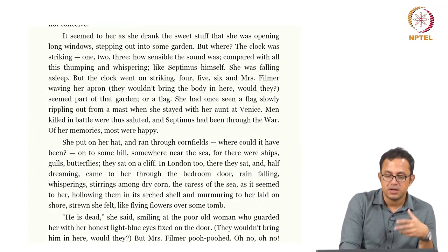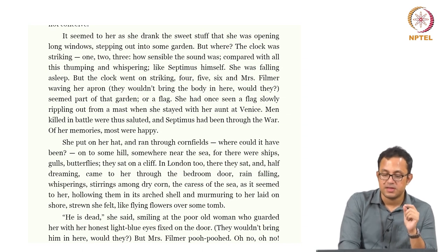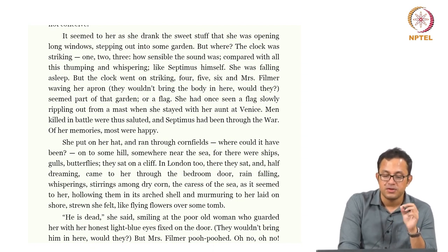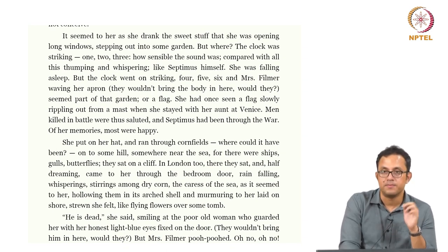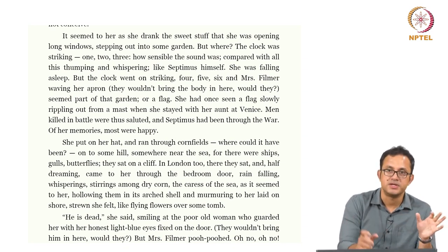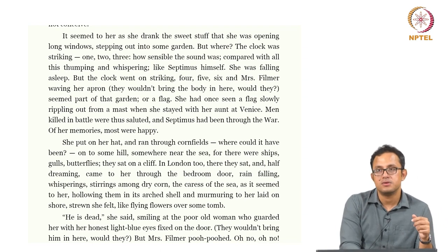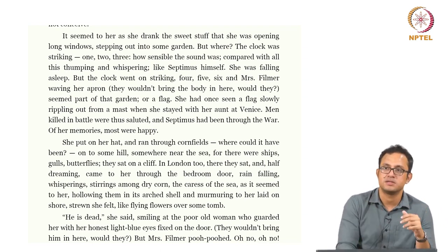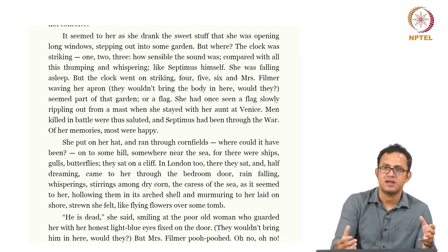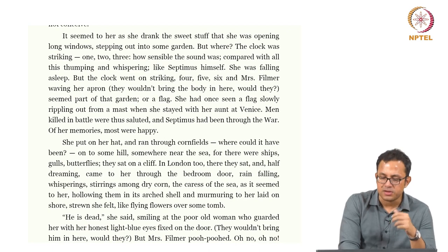The dream continues: she put on her hat and ran through cornfields, onto some hill near the sea, where there were ships, birds, butterflies. They sat on a cliff. Coming through the bedroom door — rain falling, whisperings, stirrings among dry corn, the caress of the sea — she felt like flying flowers over some tomb. The final image gives a sepulchral quality to this reverie, but with markers of beauty, fulfillment, and natural abundance. The final image of Septimus in Rezia's mind is one of romantic abundance, fecundity, and fertility — things he could not achieve in real life, given the almost loveless existence imposed by medical violence.